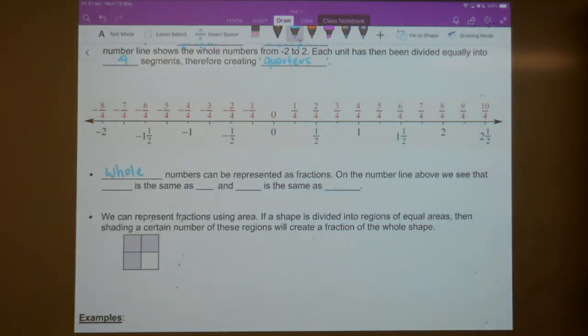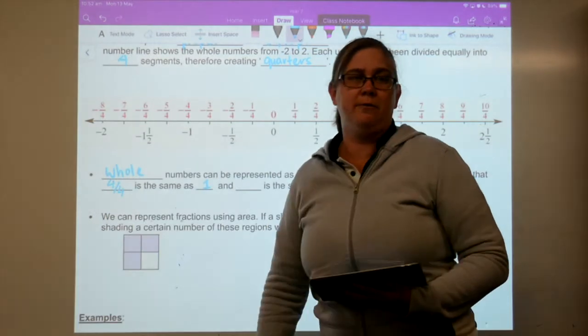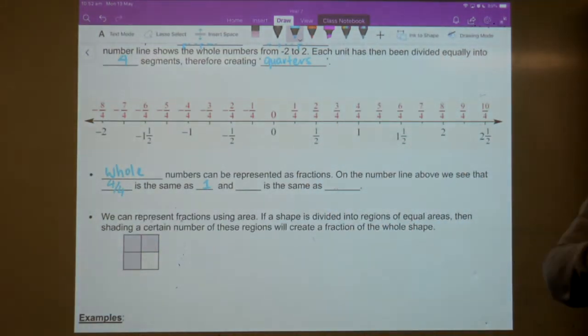So, on that number line that we have there above, if I have four on four, what is that the same as? 1. It's the same as 1. So, if we have any number above itself, all right? So, we've got four on four there. If I have 10 over 10, 6 over 6, 100 over 100, that's all equal to 1. All equal to 1.